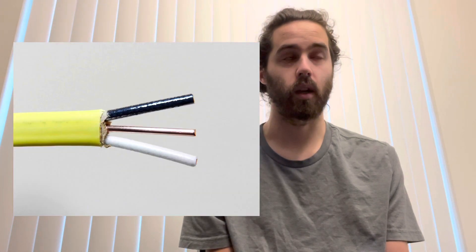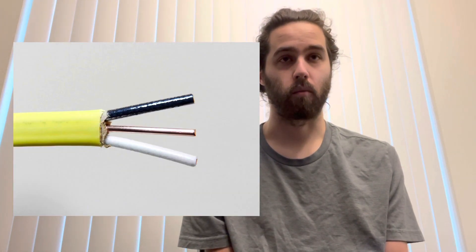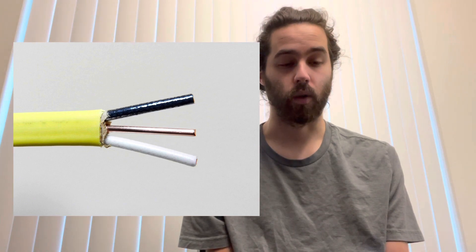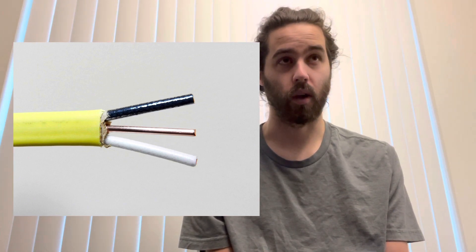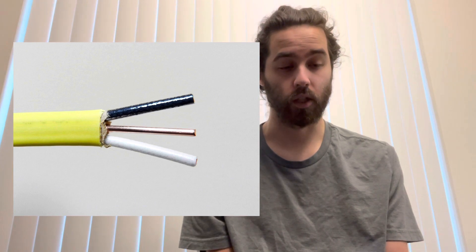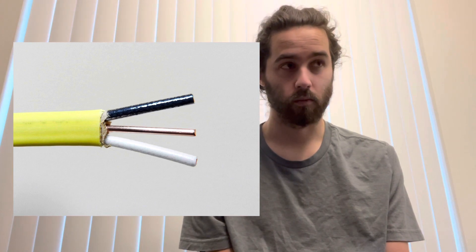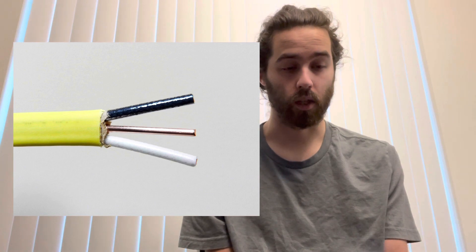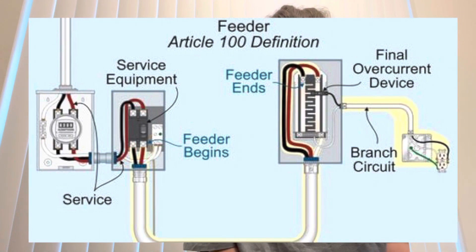Then you've got your hot, neutral, and ground, which are inside the wire — inside your Romex. You've got your black wire, which is your hot; your white wire is your neutral; and your ground is usually the bare wire. In a commercial application, the ground will be in a green coating of plastic insulation. Then you've got your feeder, which goes into the panel. The wire going into the panel is called the feeder, powering up the panel.